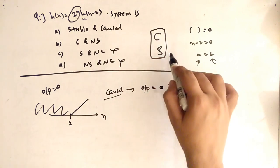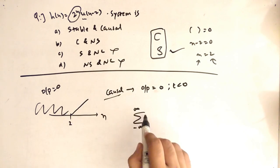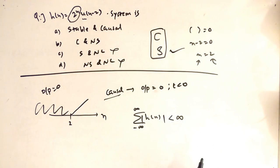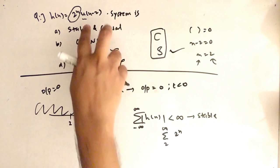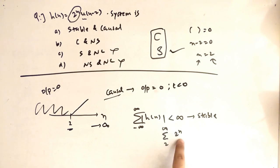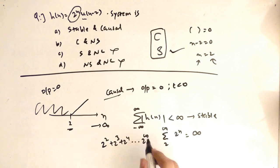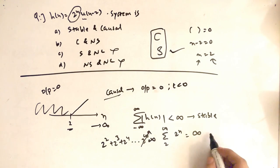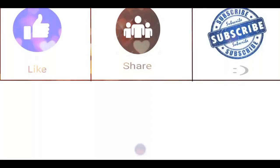Now check stability using the summation criterion: Σ|h[n]| from -∞ to ∞ must be less than infinity. Since h[n] = 2^n for n≥2, the sum becomes 2^2 + 2^3 + 2^4 + ... which diverges to infinity. Therefore the system is not stable. Combining: it is causal but not stable, so the answer is option B.